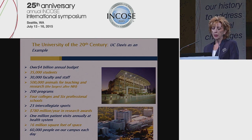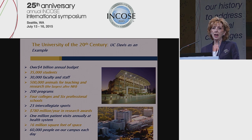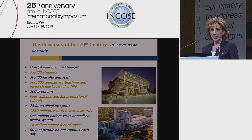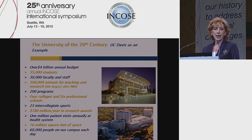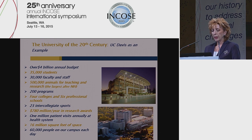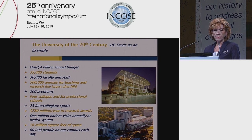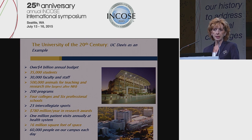Just to give you an idea of the size: UC Davis has over four billion in annual budget, 35,000 students, close to 30,000 faculty and staff, about half a million animals for teaching and research — animals that have a birth certificate, and if anything happens to them we have to submit a report to the NIH. It's a very large operation with more oversight than humans in many ways. There are 200 programs, four colleges, six professional schools, 23 intercollegiate sports, close to 800 million a year in research awards, one million patient visits annually at the health system, 16 million square feet of space, and 60,000 people on campus every day.